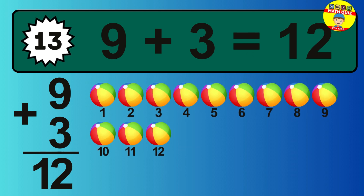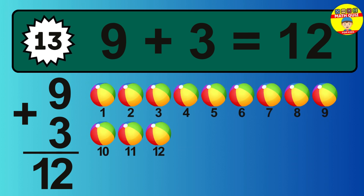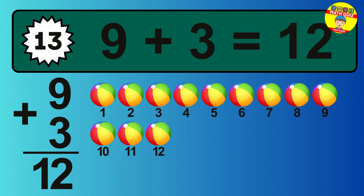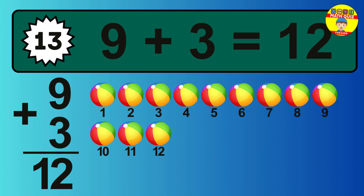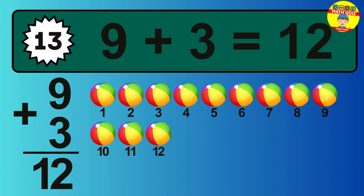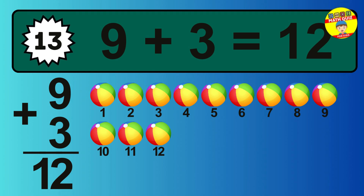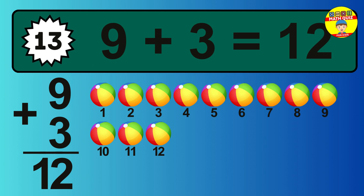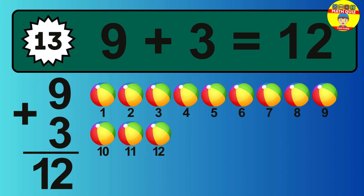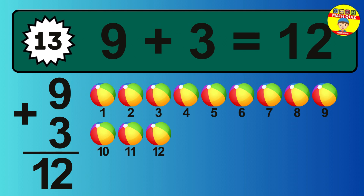So the answer is 9 plus 3 is 12. Let's count it: 1, 2, 3, 4, 5, 6, 7, 8, 9, 10, 11, 12.